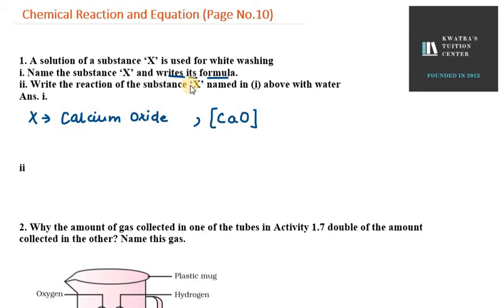So you have to do the reaction with water. That is H2O. CaO, calcium oxide plus water gives us calcium hydroxide. Calcium hydroxide is aqueous, H2O is liquid and CaO is solid. So when calcium oxide reacts with H2O it forms calcium hydroxide.